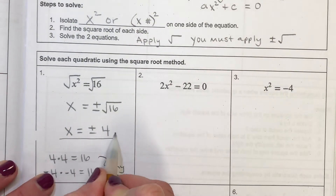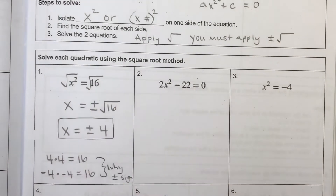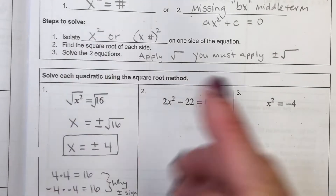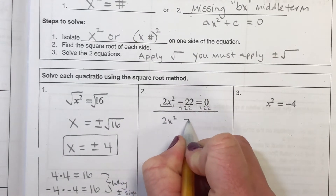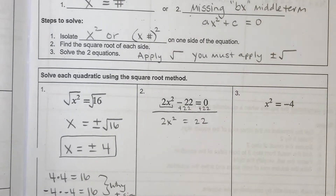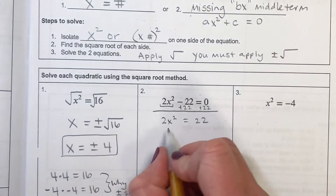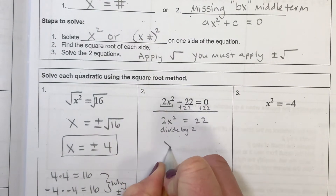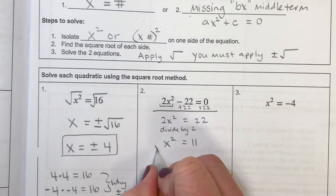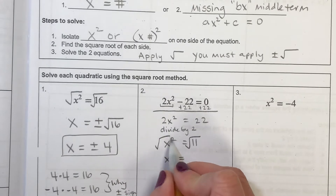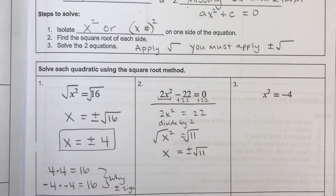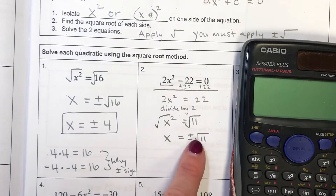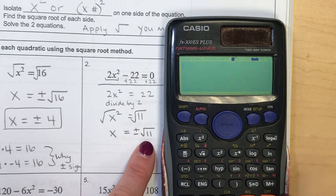For x squared equal to 16, the two numbers that could be squared to make 16 are positive 4 or negative 4. In the next example, I need to isolate my square term by adding 22 to the other side, then dividing by 2 to get x squared equal to 11. Now I apply the square root symbol — the square root of x squared is just x — and I apply the plus and minus here.